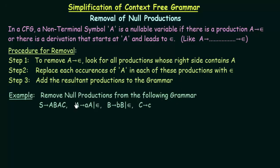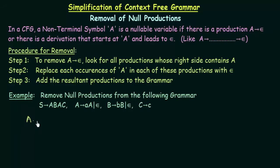Here we have an example: remove null productions from the following grammar. S is the start symbol; the non-terminal symbols are A, B, and C, and the terminal symbols are small a, b, and c. The production rules are: S gives ABAC; A gives AA and also epsilon; B gives BB and also epsilon; and C gives small c. The first step is to find which are the null productions. We see that A gives epsilon and B gives epsilon — these are the two null productions we have to remove.